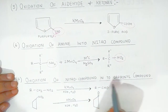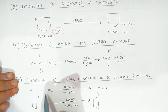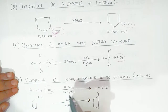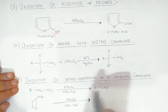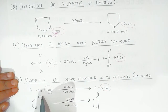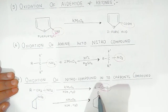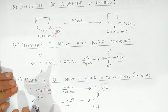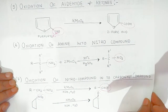Now, oxidation of nitro compound into carbonyl compound. Here, the compound contains a nitro group. In presence of KMnO4 in basic medium, it is converted into the corresponding aldehyde — so CH2NO is converted into an aldehyde group. Also, where the ring contains a nitro group as a side chain, it is oxidized to form a ketone. So nitro compound is converted into a carbonyl compound.